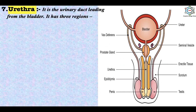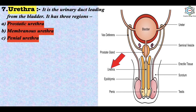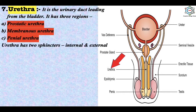The urethra is the urinary duct leading from the bladder and it has three regions. First is the prostatic urethra, surrounded by the prostate gland. Second is the membranous urethra, which has no covering. Third is the penile urethra, which passes through the penis. The urethra has two sphincters — an internal sphincter made up of smooth muscle fibers and an external sphincter made up of striated muscle fibers.